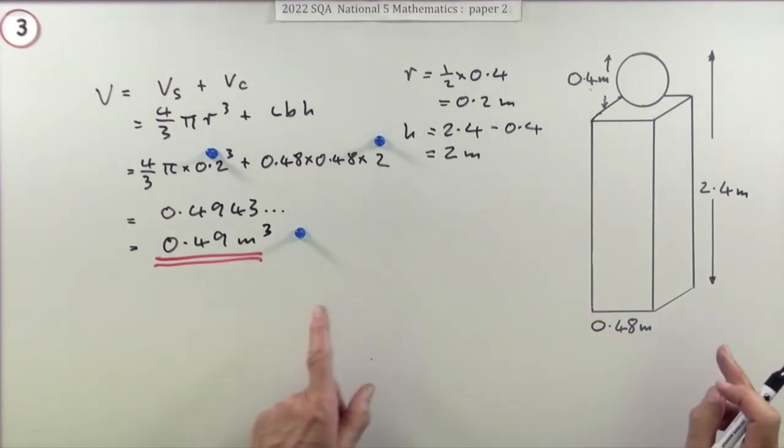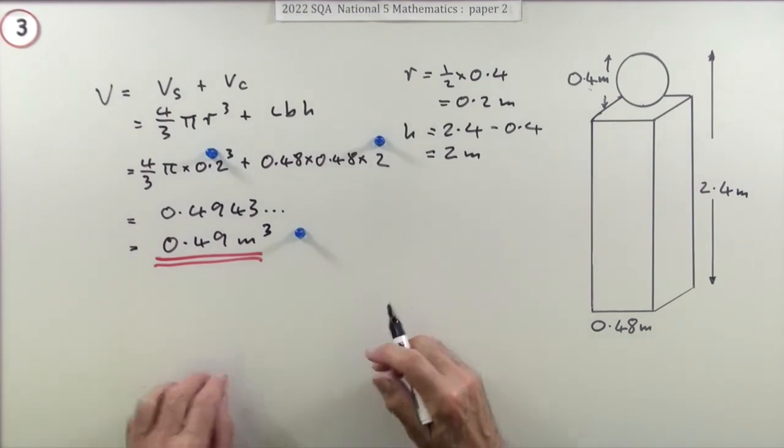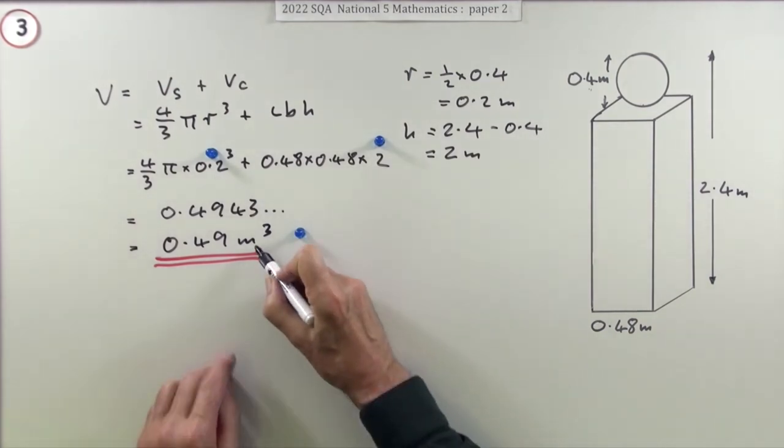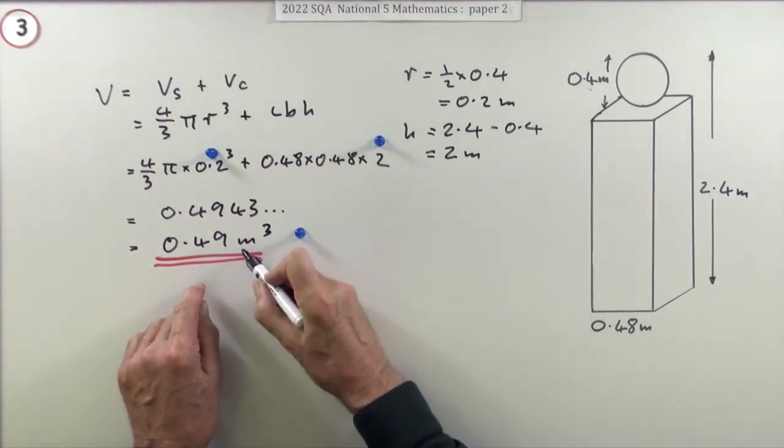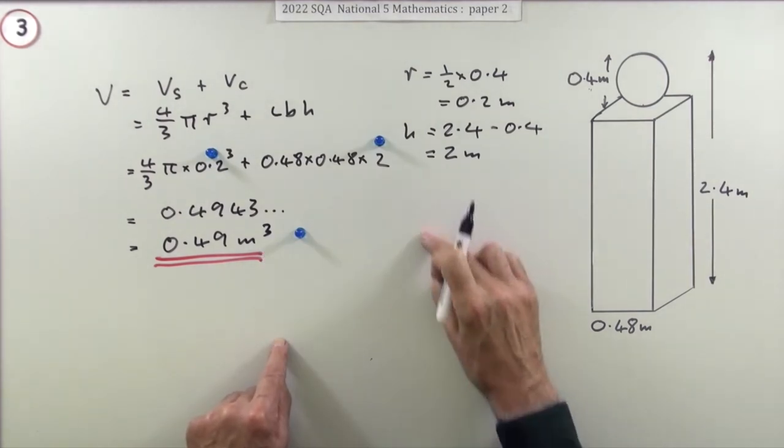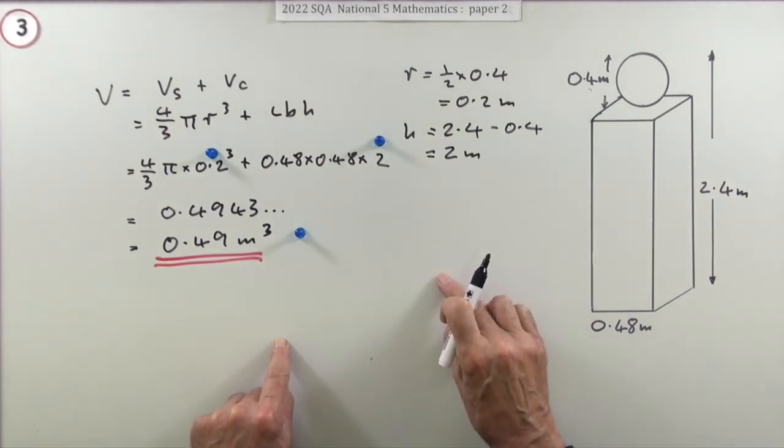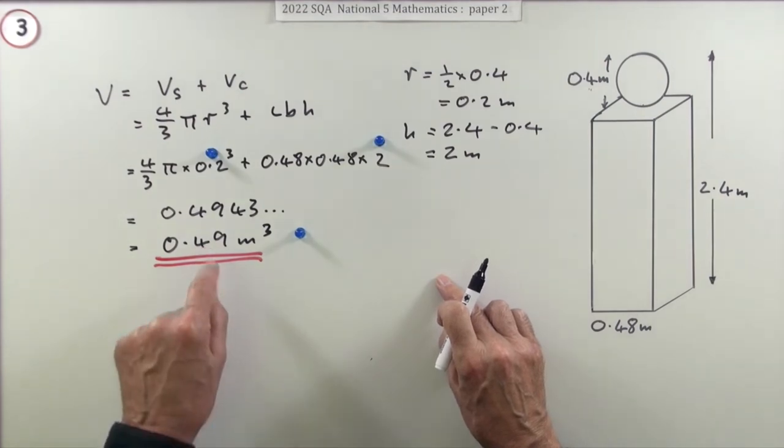If you'd gone for centimeters, you'd have had exactly the same figures, just the sizes would be different. Instead of meters cubed, with centimeters cubed, since in a cubic meter there's going to be 100 times 100 times 100 cubic centimeters, that's a million of them.